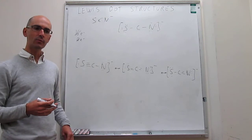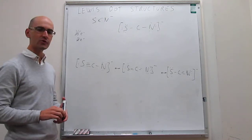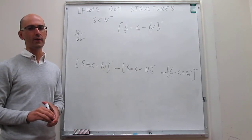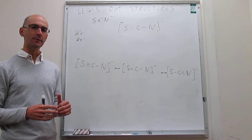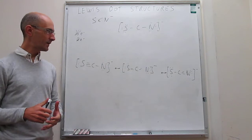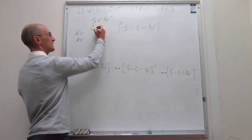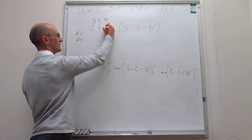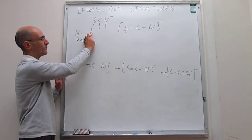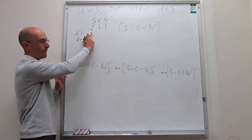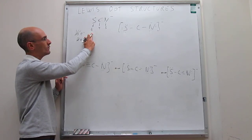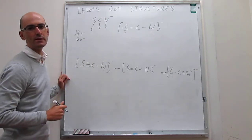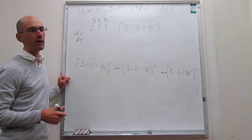Formal charge is a way to figure out what the charge of the atoms in these structures would be, by comparing the number of electrons that the atom has by itself — the valence electrons — to the number of electrons that belong to the atom once it is in the Lewis dot structure. We know that the valence electrons of sulfur are six, carbon are four, and nitrogen are five. So in these structures, if sulfur would have seven electrons, that is one more than in the valence, meaning sulfur would have a formal charge of negative one. Or if there's a resonance structure in which sulfur has five electrons, that would be one fewer, giving sulfur a formal charge of plus one.